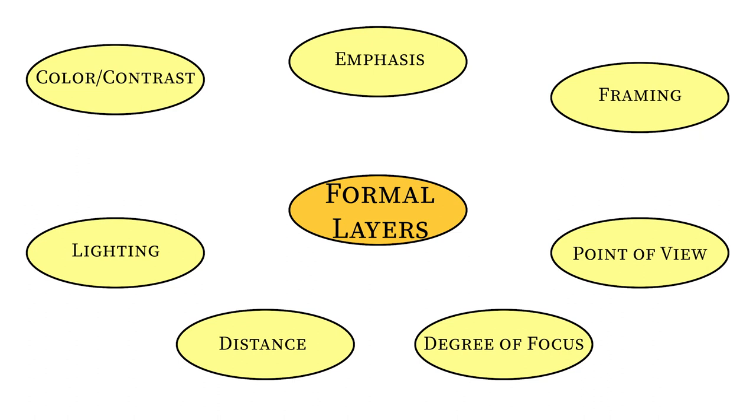Again, you're not always going to be able to find these things in every image and they aren't always going to be important in every image. So for an analysis, it's always going to be your job to figure out which of these elements is most important and focus on those. So those seven covers the formal elements, the technical elements of photography. And then moving on from that, we have social layers.